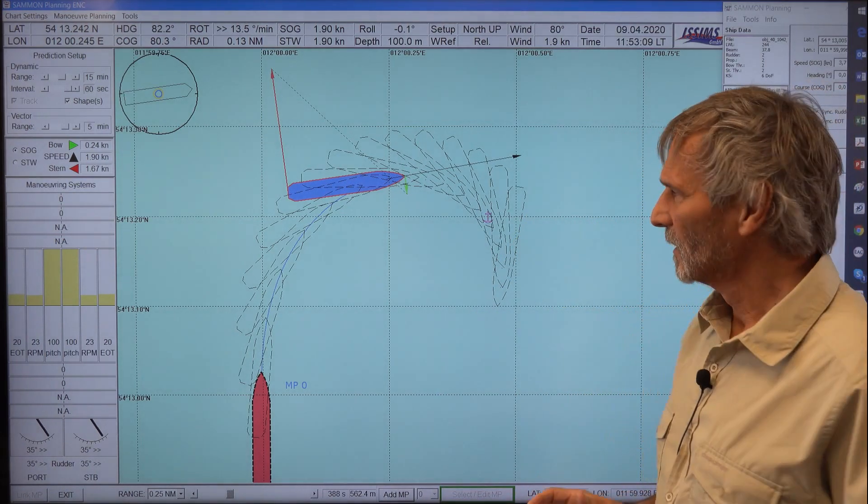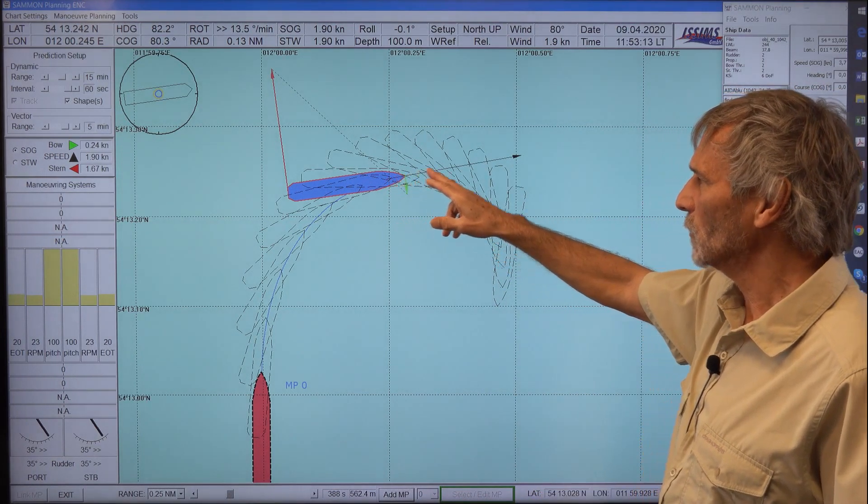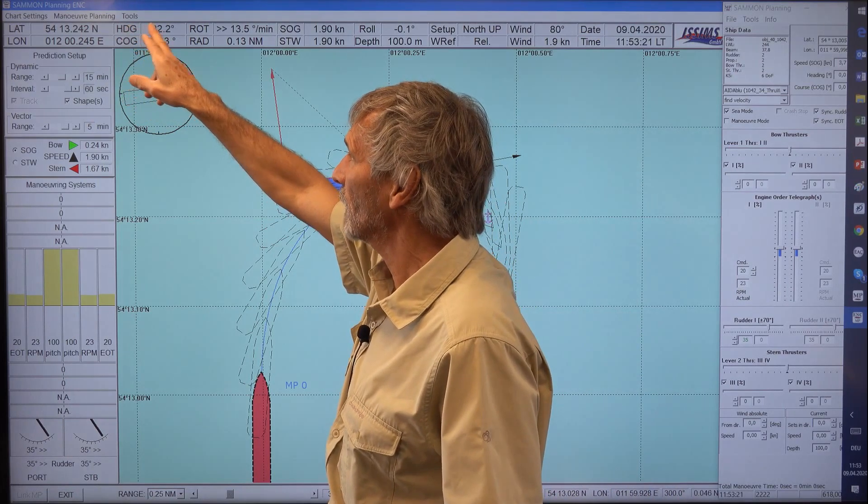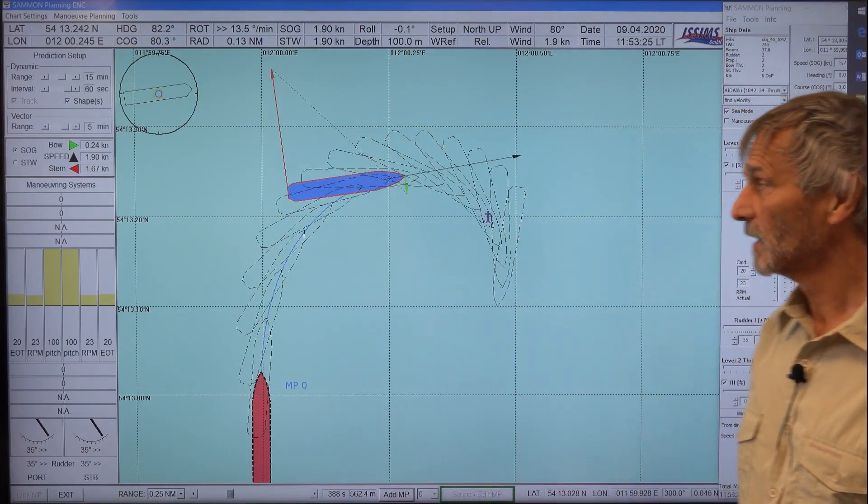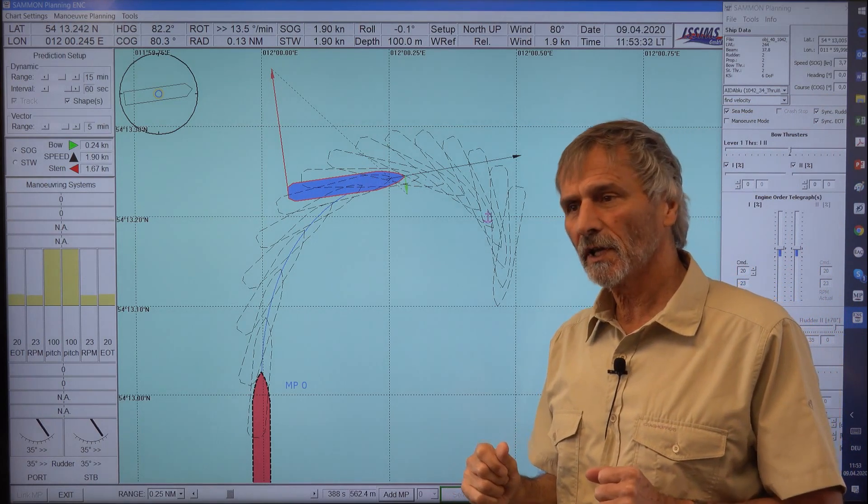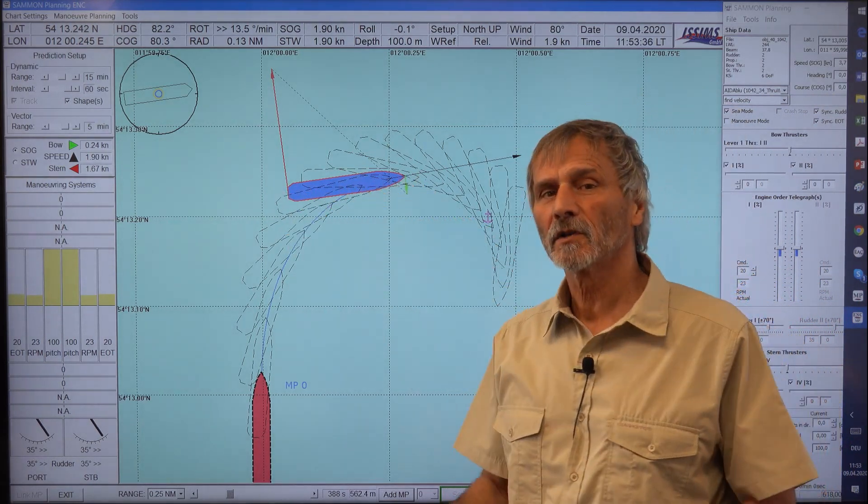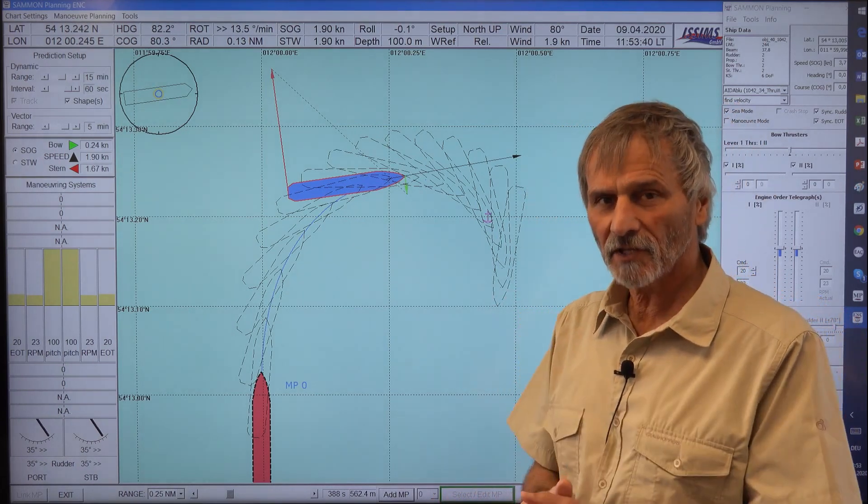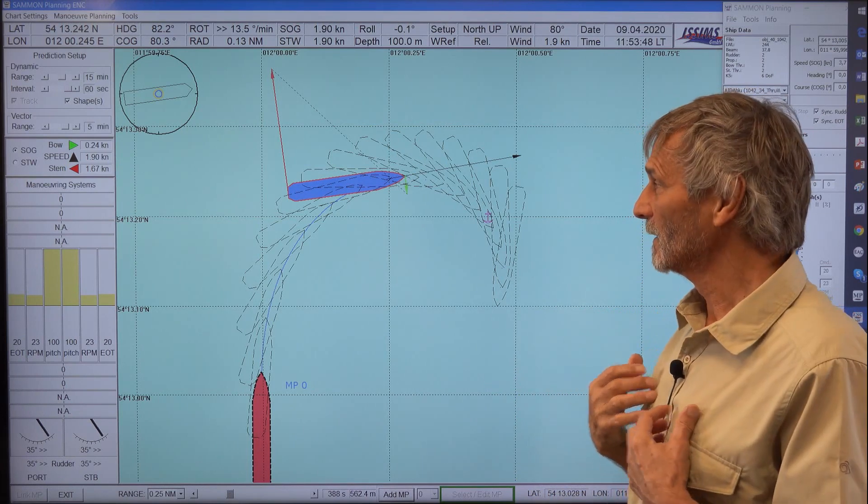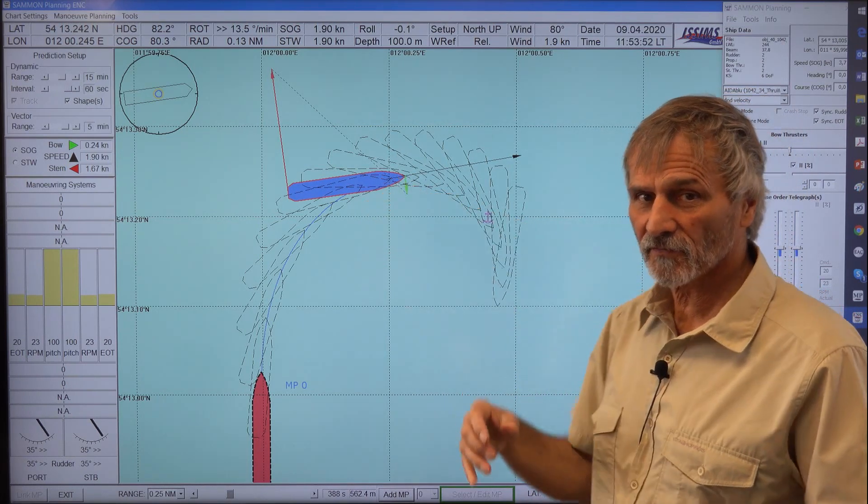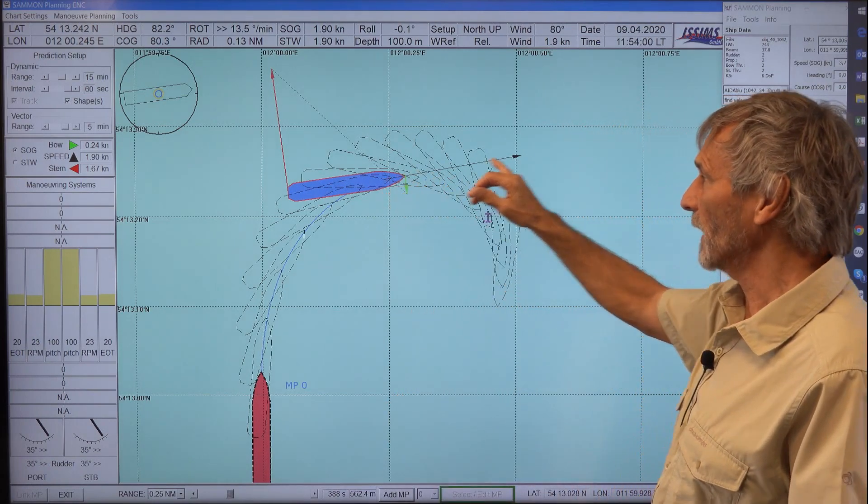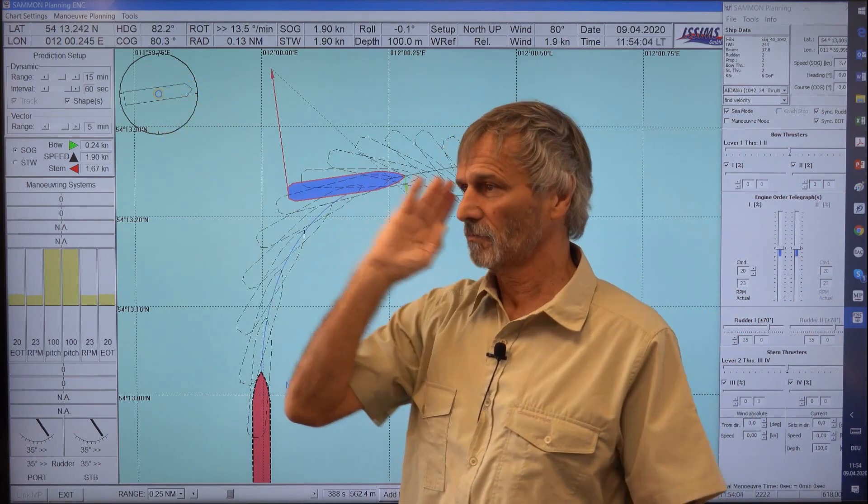You might ask why on earth the course over ground vector is pointing nearly in the heading direction. So between course over ground and heading, there's only two degrees difference. This has something to do with the so-called common reference point. You can adjust on the ship length where you want to have your speed vector located. Normally you take the bridge position for this one, but this has the so-called advantage in my mind that if the common reference point is very close to the pivot point, then there is no transfer speed. So the course over ground vector points in the same direction as the heading, so straight ahead.